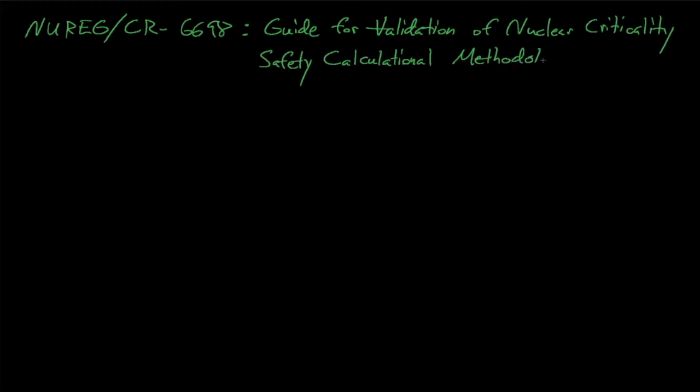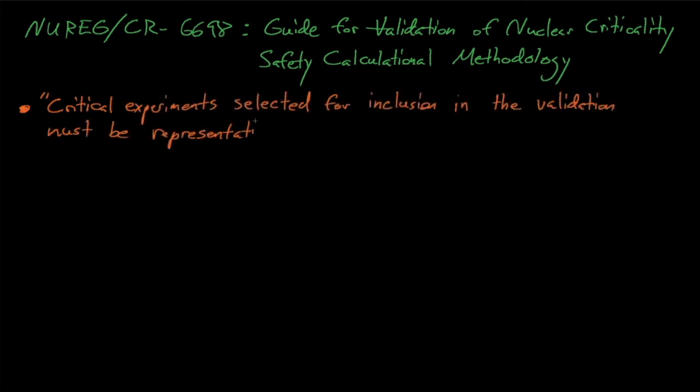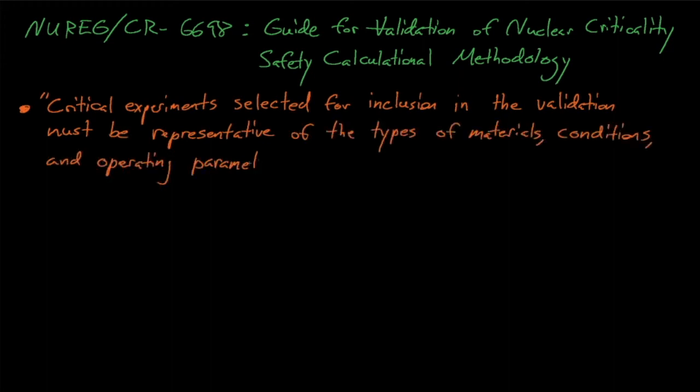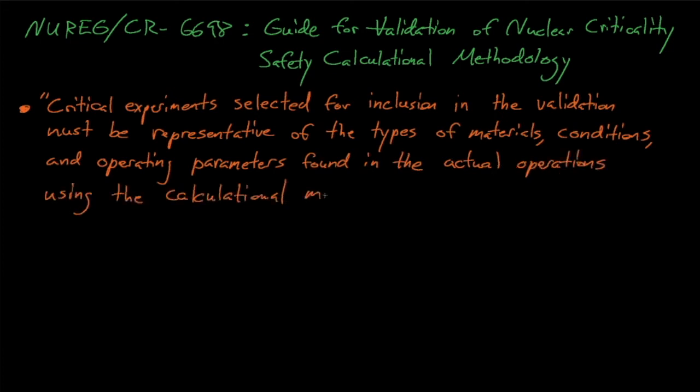The NRC NUREG CR-6698 document is one of the golden standards for code validation and provides some excellent guidance for code validation analyses. 6698 states that critical experiments selected for inclusion in the validation must be representative of the types of materials, conditions, and operating parameters found in the actual operations using the calculation. In other words, even though we have a delta k AOA in our USL equation, our computational bias calculations must use benchmark experiments that are representative of our target application. Using experiments that are not similar to the target application violates the rules of statistics since it draws inference on data that is outside of the given set of experimental data.